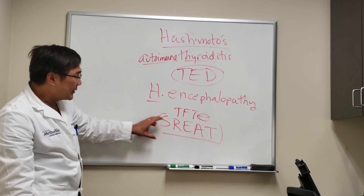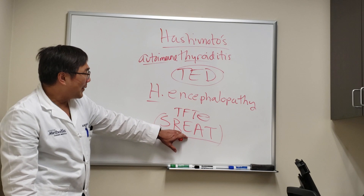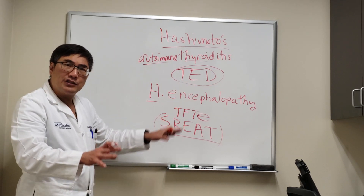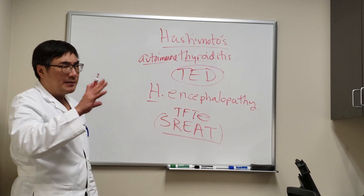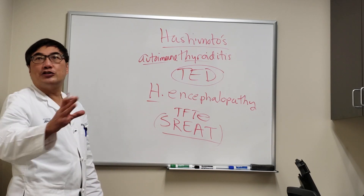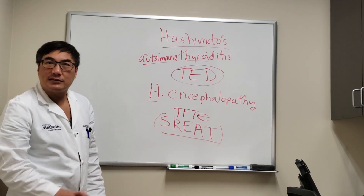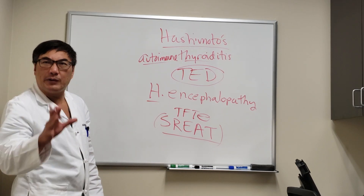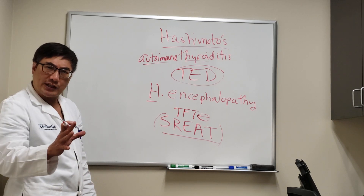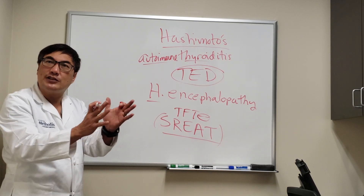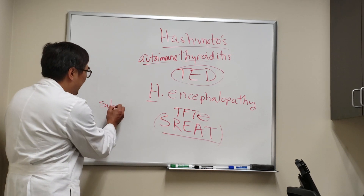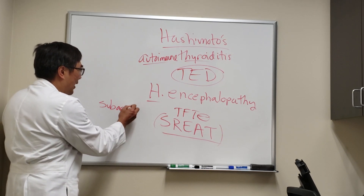The encephalopathy can manifest as seizures, mental status change, hallucinations, and memory loss, and it's subacute — not like slowly progressive neurodegenerative disorders. It happens over weeks to months. So it's a subacute encephalopathy.